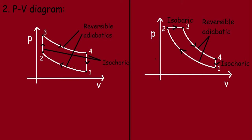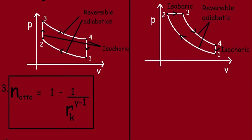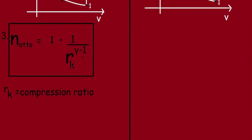Now let's look at the efficiencies. The efficiency for the Otto cycle is: η_Otto = 1 − 1/Rk^(γ−1), where Rk is the compression ratio and γ is the specific heat ratio (ratio of Cp to Cv). From this expression, if the compression ratio Rk is lower, the term 1/Rk^(γ−1) becomes higher, which is undesirable.